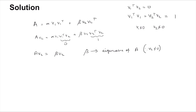Similarly, when you post-multiply by v1, you find that A·v1 = alpha·v1, meaning alpha is also an eigenvalue of A.